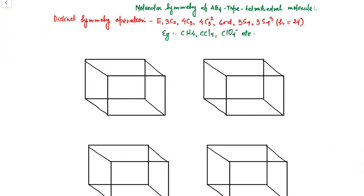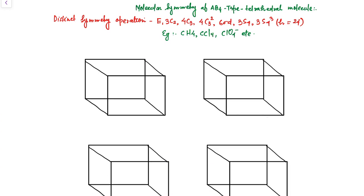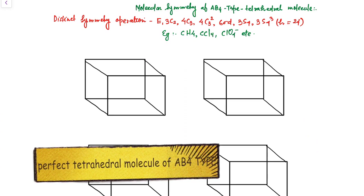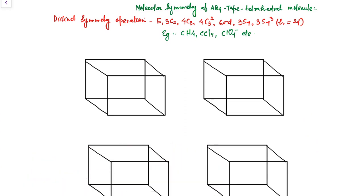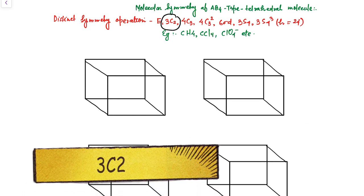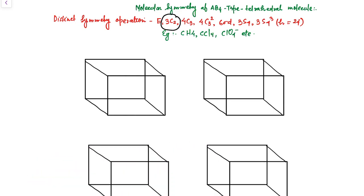Hi everyone, welcome to my channel BigBandChemistry.com. Today I'm going to explain the presence of proper axis of rotation present in a perfect tetrahedral molecule. In my previous video, I already explained how we represent the tetrahedral molecule in a cube and what is the need and why we represent it. So today I will explain the presence of the proper axis of rotation, that is 3C2, present in this AB4 type tetrahedral molecule.